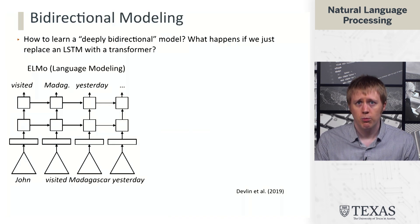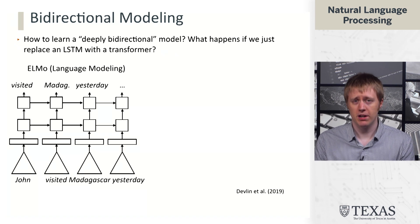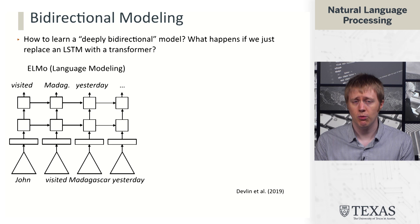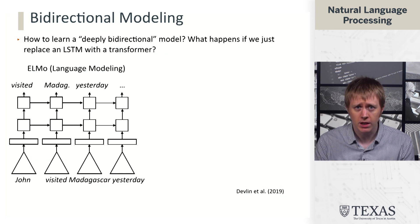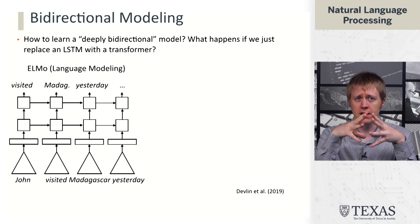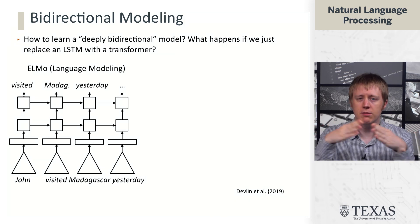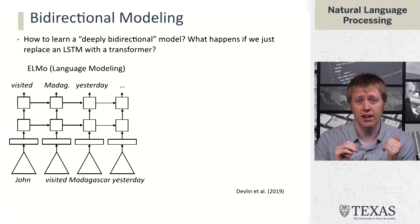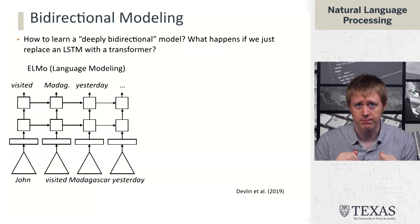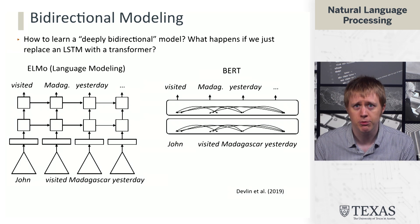So how do we learn this model that's so-called deeply bidirectional? BERT compared to ELMo replaces LSTMs with transformers, and transformers allow us to look at the context more broadly with the self-attention mechanism. So maybe we can just train a language model using transformers instead of LSTMs and then we'd be done. What happens if we do that?